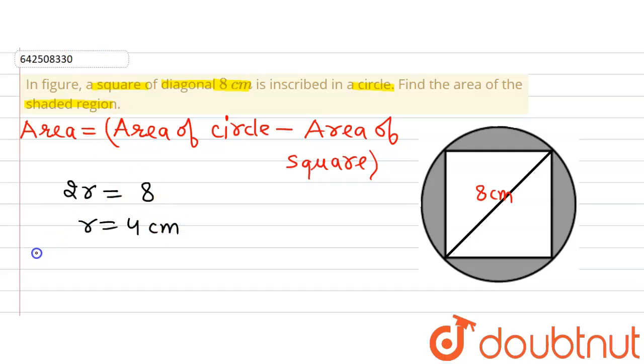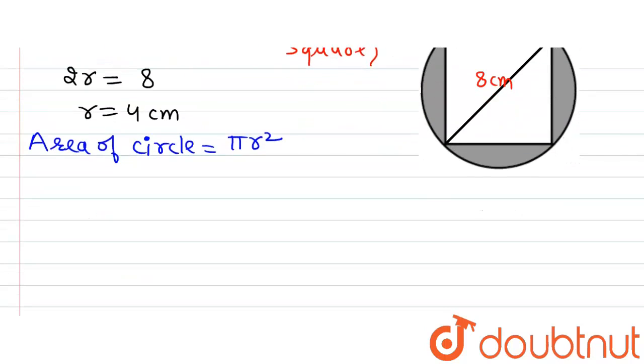Now using the formula for area of circle, we can write down area of circle equals πr². Now putting in the values, we get π multiplied by 4 raised to the power 2, which gives us 16π cm².